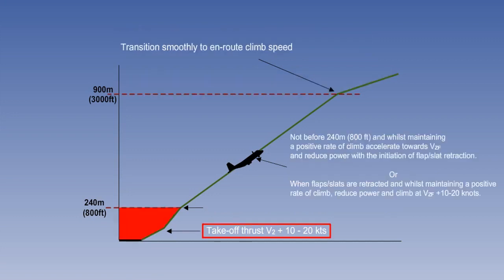The second profile shows a climb intended to alleviate noise distant from the aerodrome. The first segment to 800 feet is identical to that of the first profile.